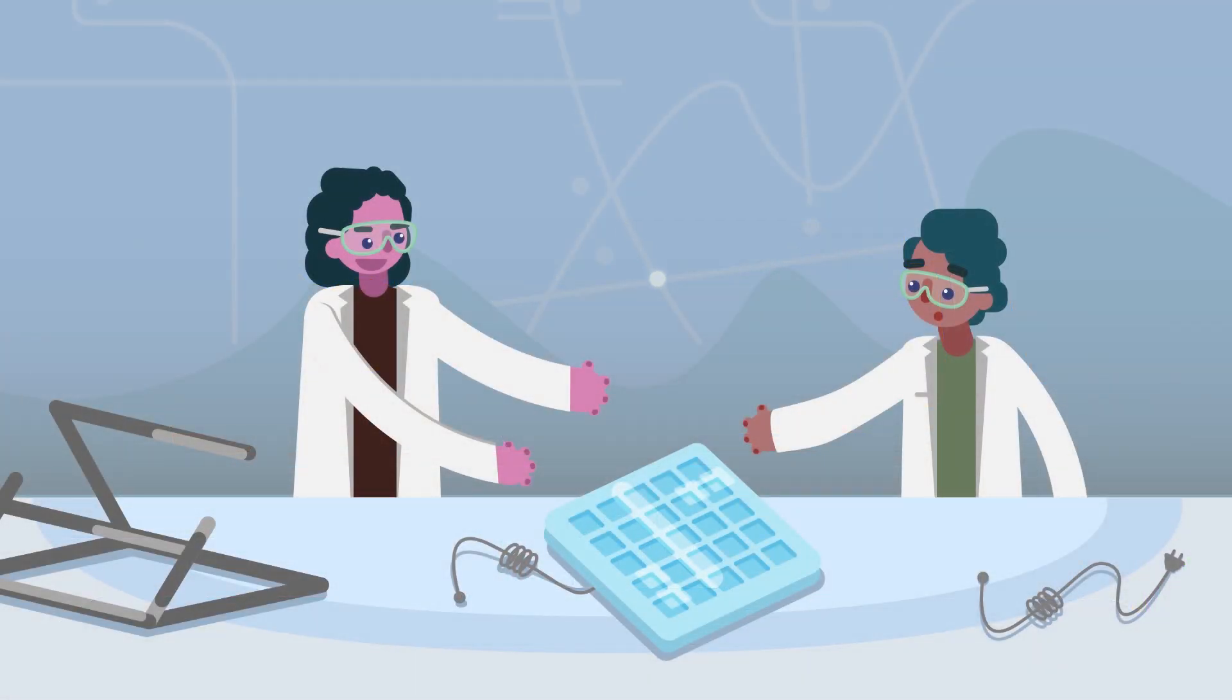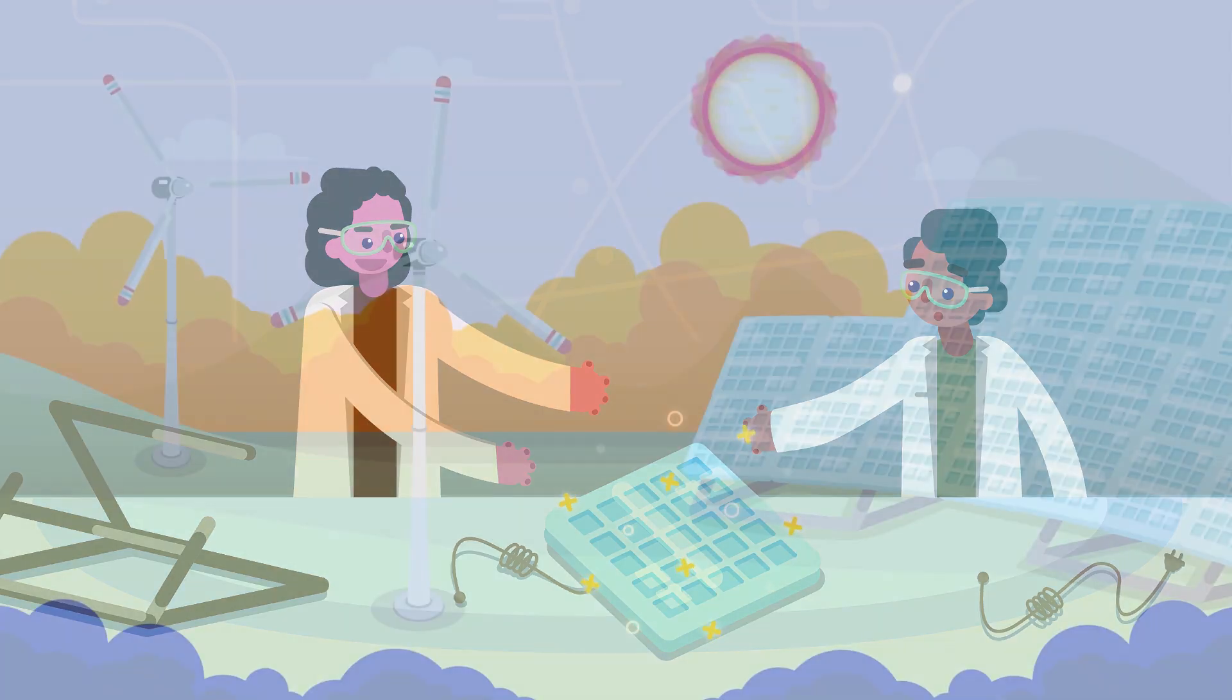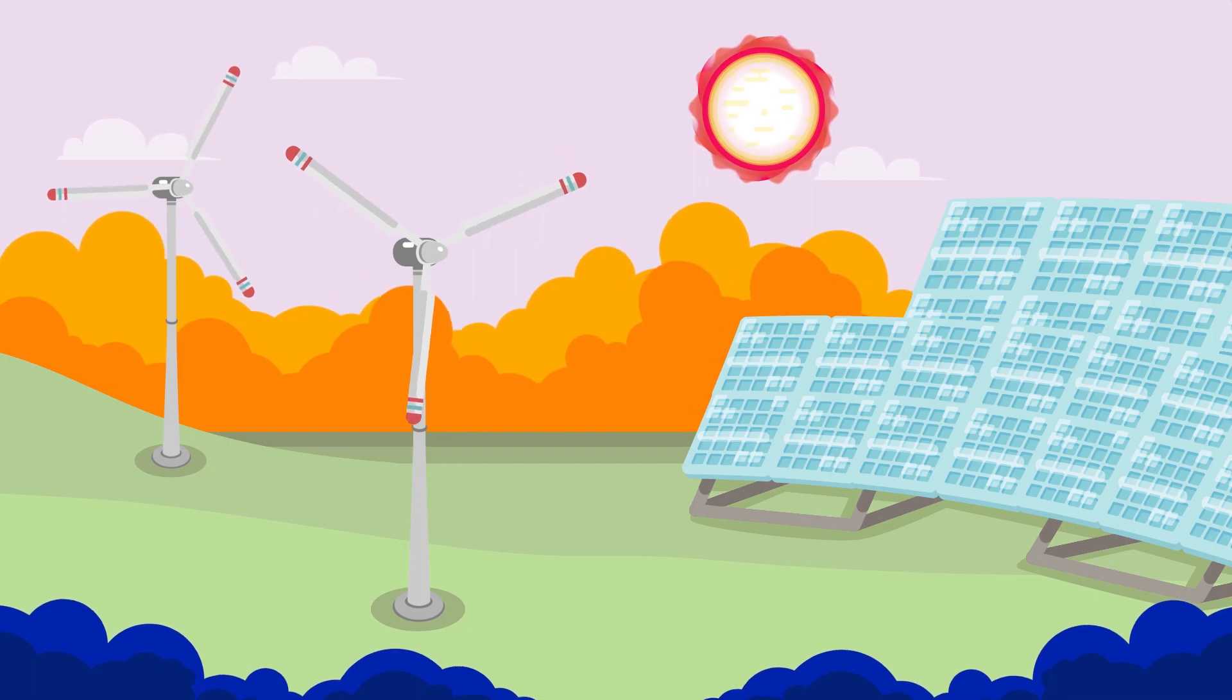So we had to find another way to make electricity. People and scientists have been working hard to find new ways to make electricity by using fuels we won't run out of and that won't hurt the planet. The best way to do this is to use renewable energy. Renewable energy is energy that is made from things in nature, such as the sun and wind and water.